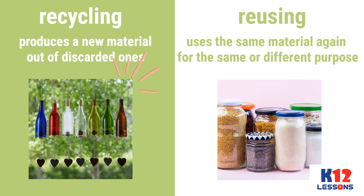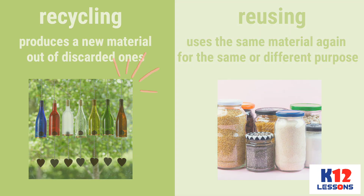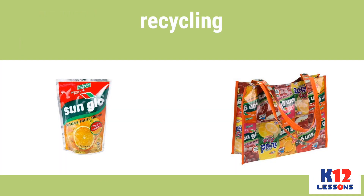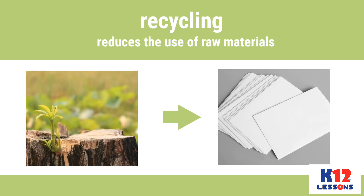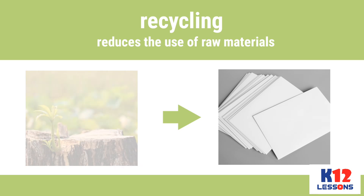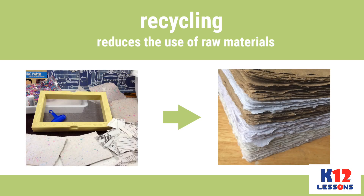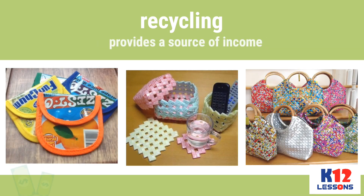The new purpose should be different from the original function, but the idea of minimizing waste has been achieved. Recycling prevents wastage of a material that can actually be useful for a different purpose. It also reduces the use of raw materials. For example, to make fresh paper, a tree has to be cut, but by recycling used papers to make writing paper, no tree needs to be cut anymore. Recycling not only helps reduce waste — it also provides a source of income to families by selling the new products they formed from discarded materials.